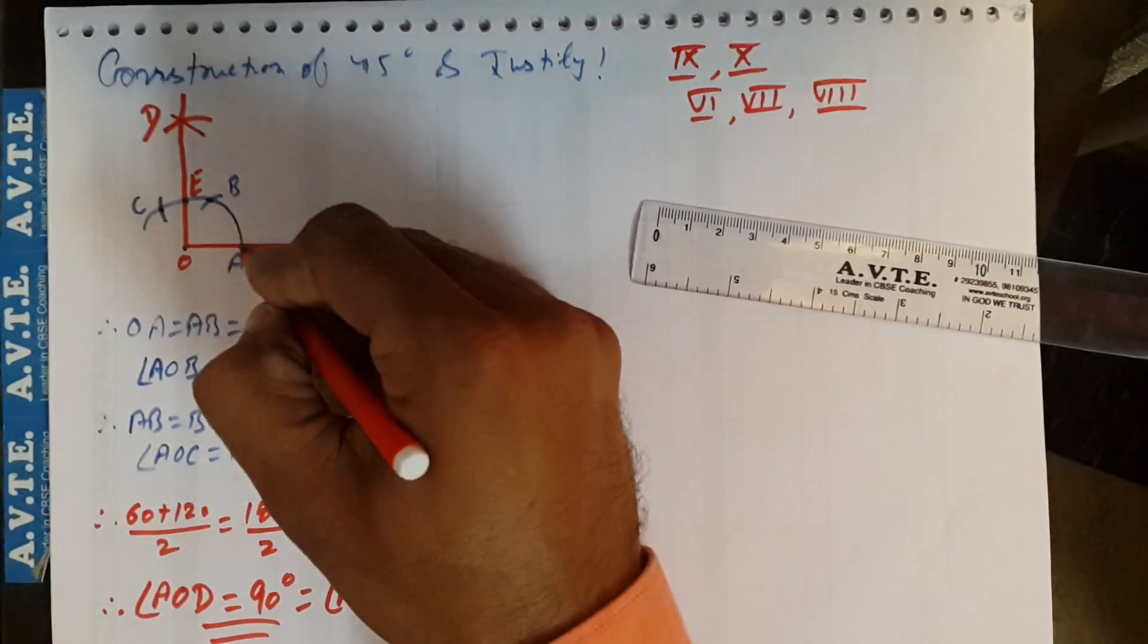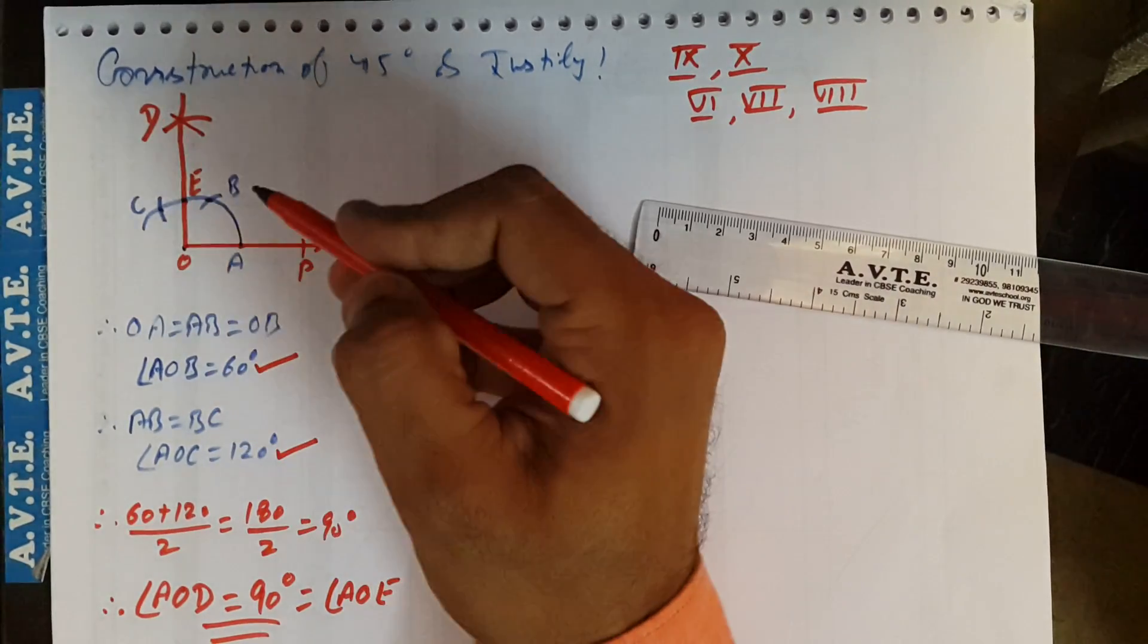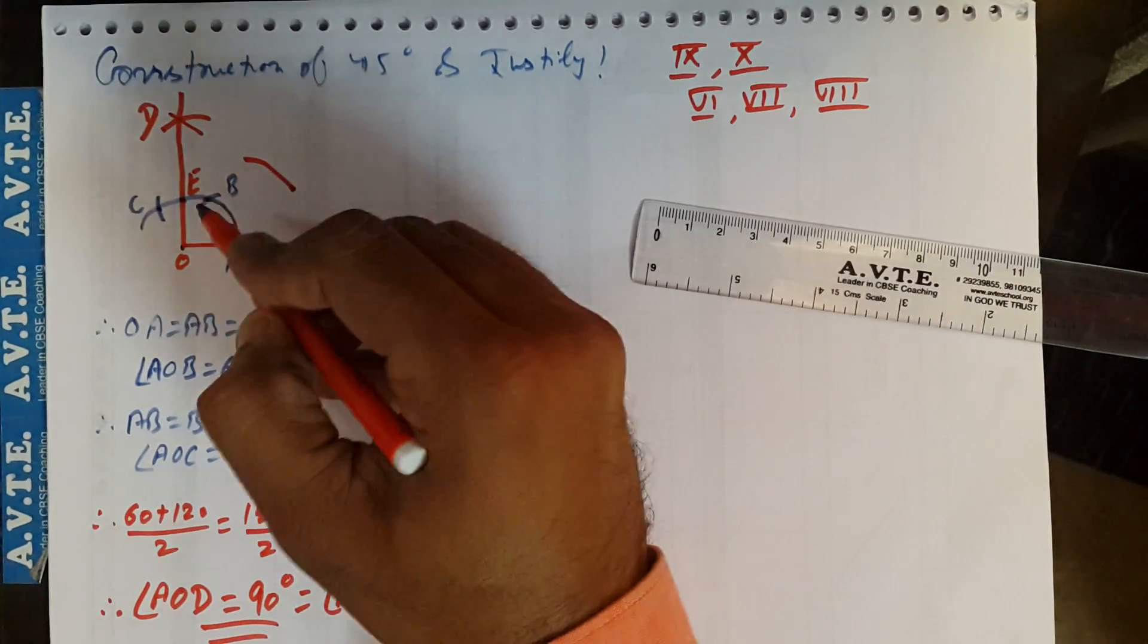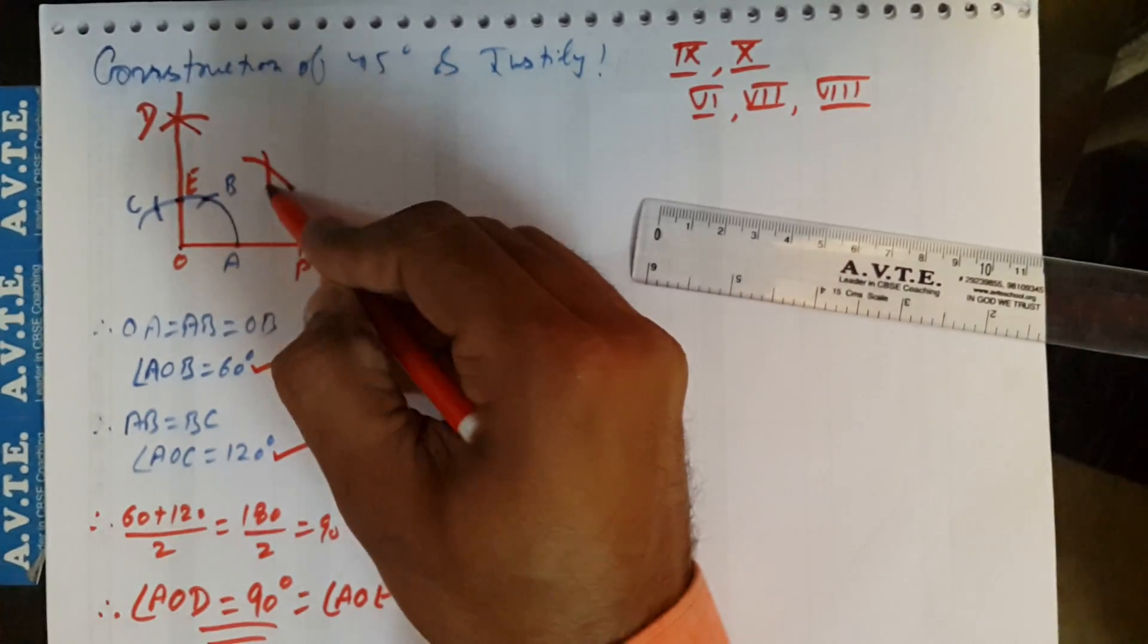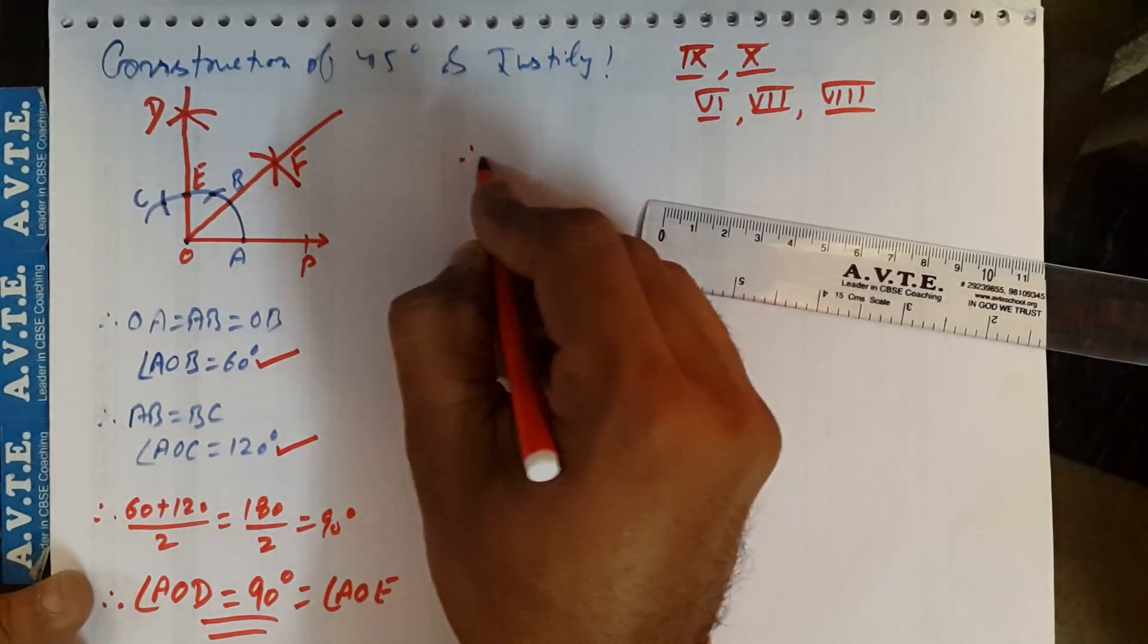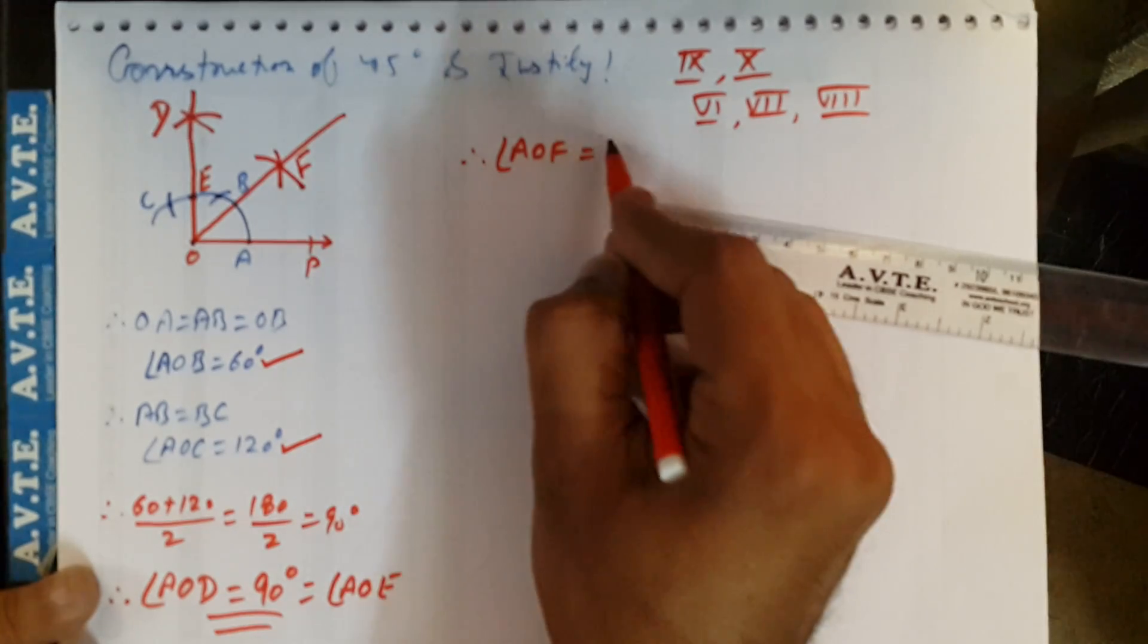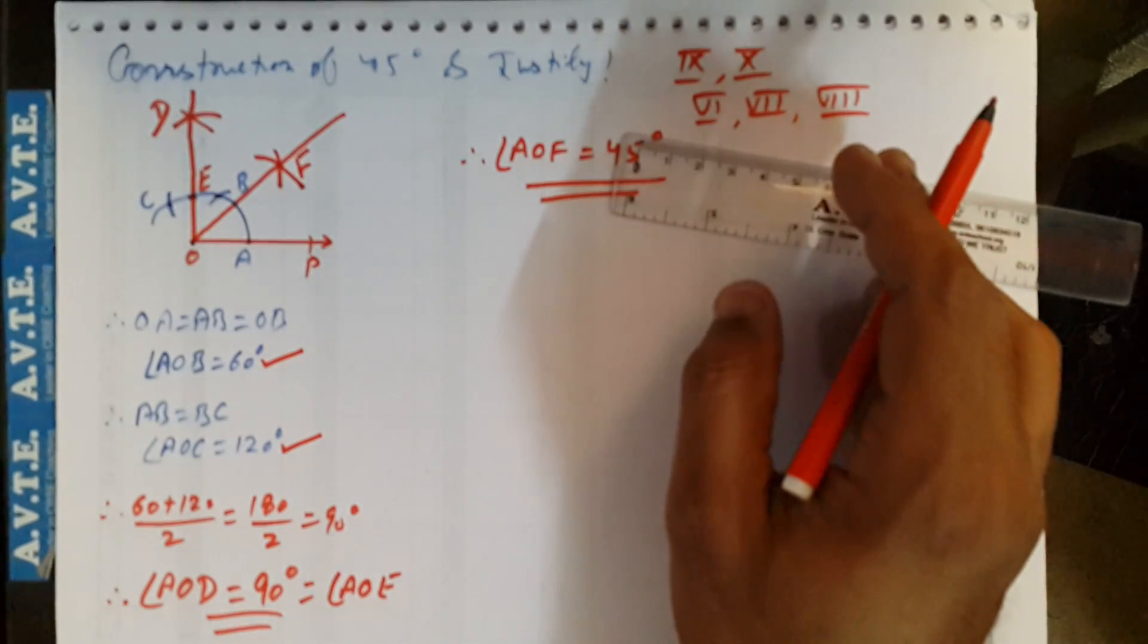You put a compass on A, with a radius AE or more than AE, you cut an arc like this. With the same radius, but from E as center, you cut an arc here. When you join them, this point is F. The angle AOF will be 45 degrees.